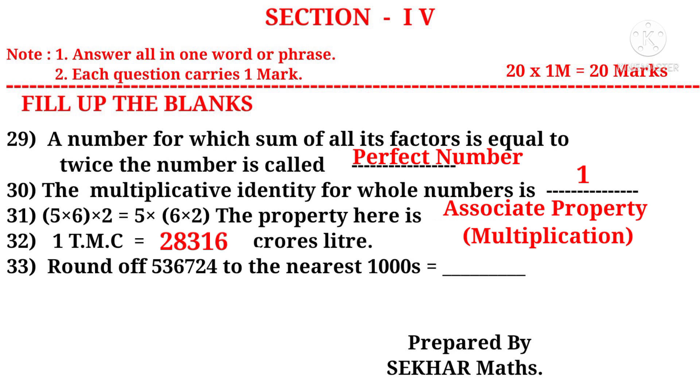33: Round off 5, 36,724 to the nearest thousands. Observe that 7 is there in hundreds place which is greater than 5. So we have to add 1 to the thousands place and put 0 to the remaining. So 5,37,000 is the answer.